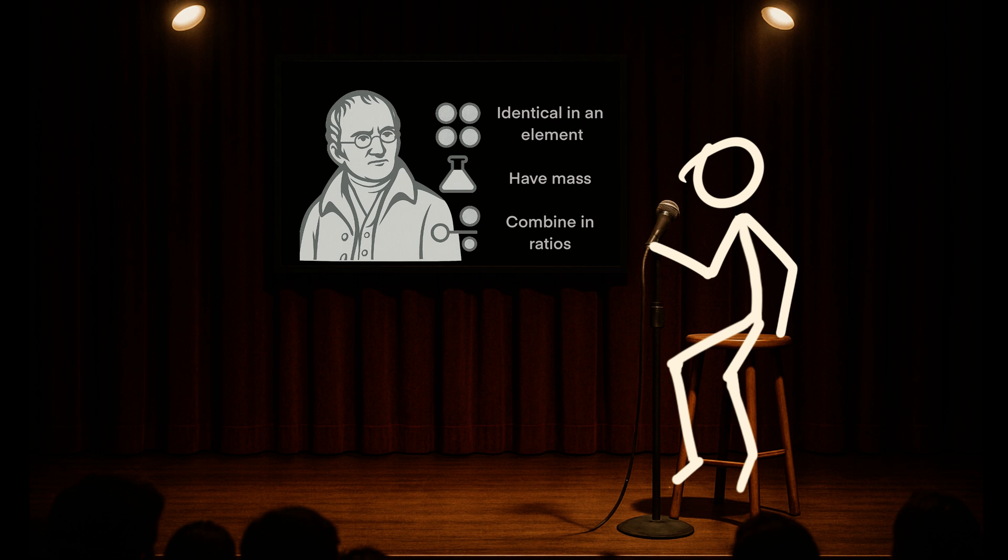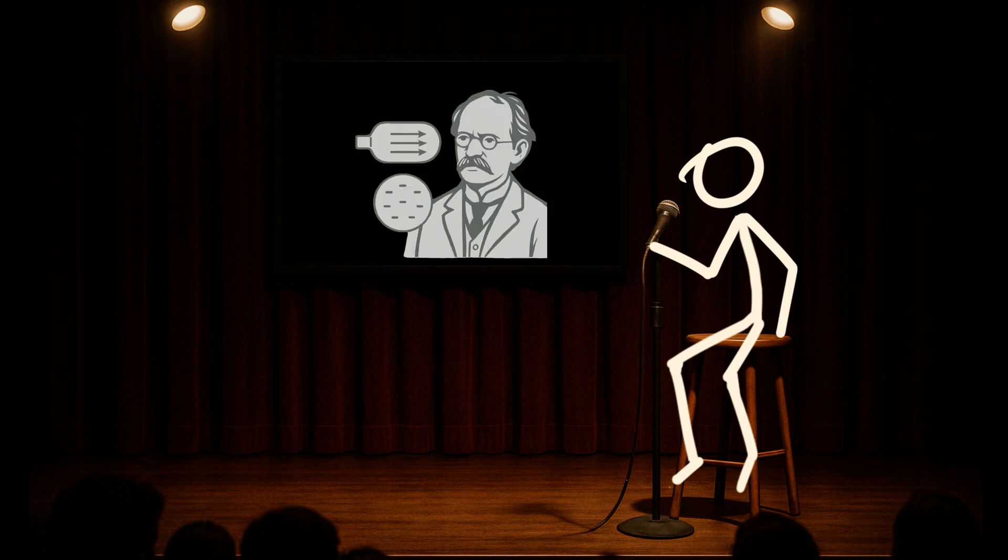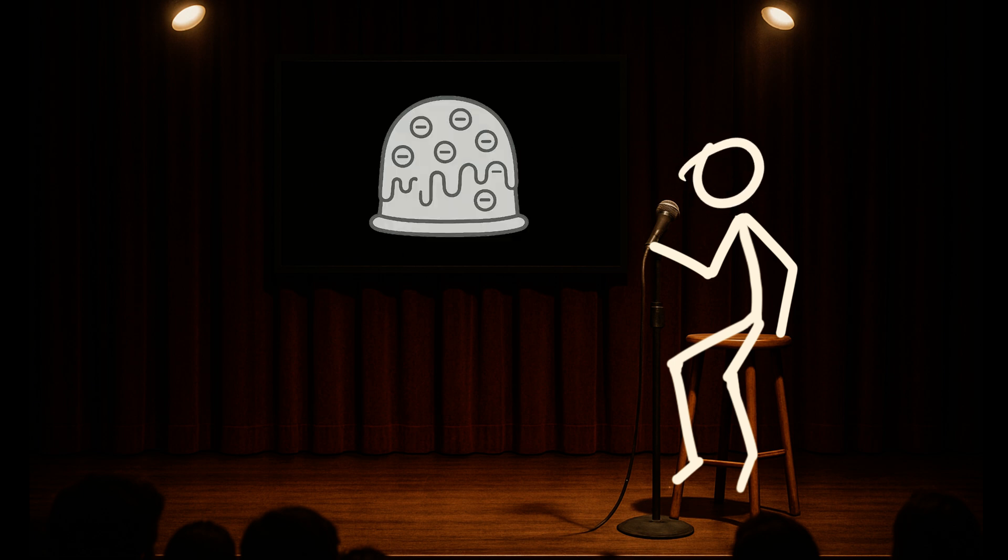But wait, atoms weren't done messing with us. In 1897 along comes JJ Thompson with his cathode ray tubes zapping stuff like a mad scientist and then he's like I found something smaller, tiny, negative. Let's call it an electron. Boom, atoms aren't indivisible anymore. And then this man says atoms are like plum pudding. What? This guy looked at the fabric of reality and said tastes like dessert.